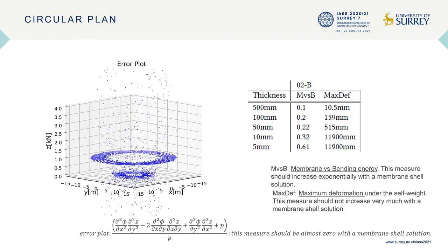We have more evidence that the solution is incorrect. The error plot, which is supposed to be nearly flat for a correct solution, had too many errors in the tension compression mix zone. The membrane energy versus bending energy ratio is too small, and the maximum deformation exponentially increases when the thickness is very small. Simply stated, these analyses suggest that the solution we obtained is a bending system.